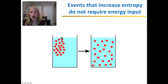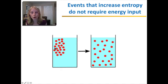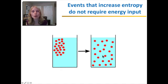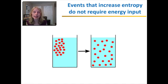But here, let's look at this droplet of food dye that's been placed into a beaker of water. So initially, this is more ordered. But as the dye diffuses through the water, it becomes more disordered — it moves towards entropy. And this process is spontaneous; it does not require an extra input of energy.